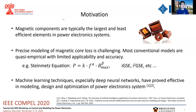However, in recent years, machine learning techniques, especially deep neural networks, have proved very effective in solving multi-variable non-linear problems, and the modeling, design, and optimization of power electronic systems are no exception. Inspired by this impressive previous work, we are currently trying to implement machine learning techniques to help us model the magnetic core loss.